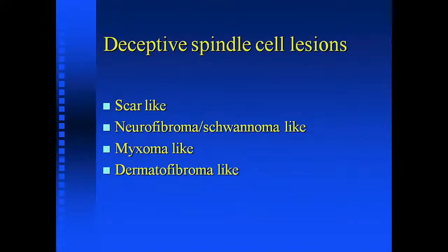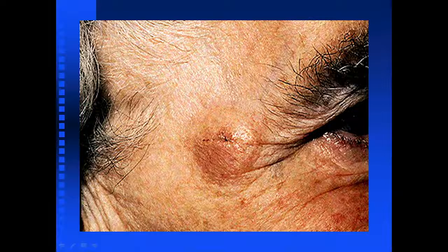Here's group one. This is what I call the deceptive spindle cell lesion group. These lesions can look like a scar, a schwannoma, a neurofibroma, a myxoma, even a dermatofibroma. This is what it looks like clinically — just a standard example, but it can actually be much more deceptive than this.